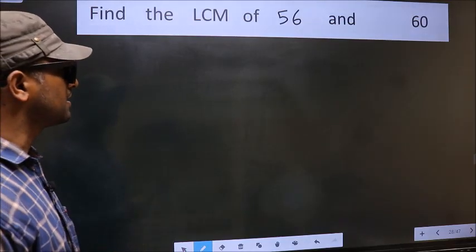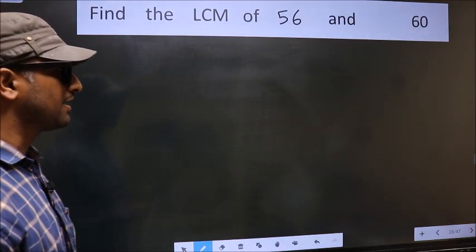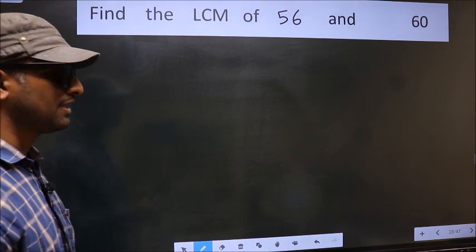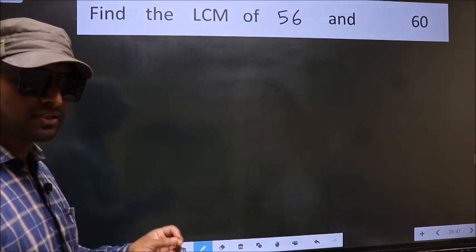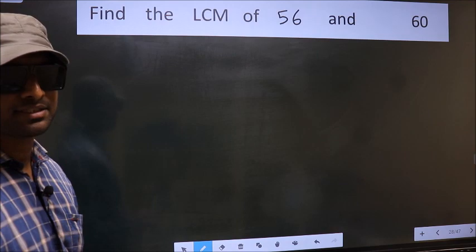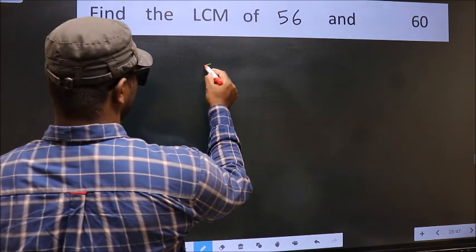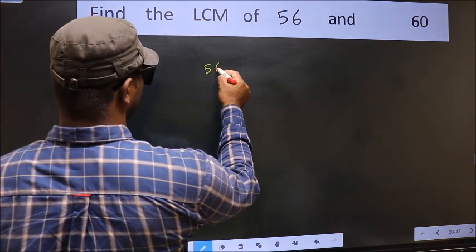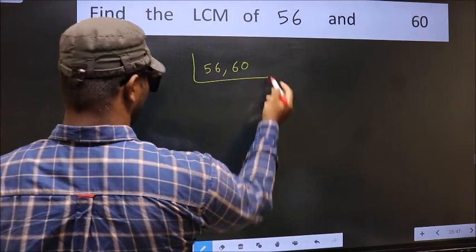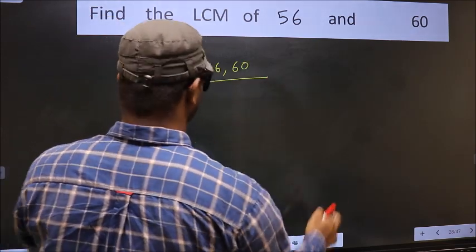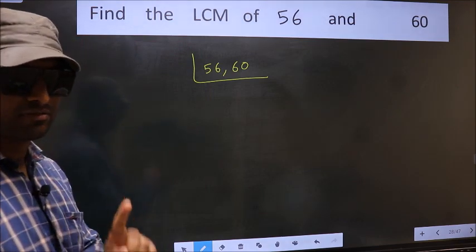Find the LCM of 56 and 60. To find the LCM, first we should frame it in this way: 56, 60. This is your step 1.